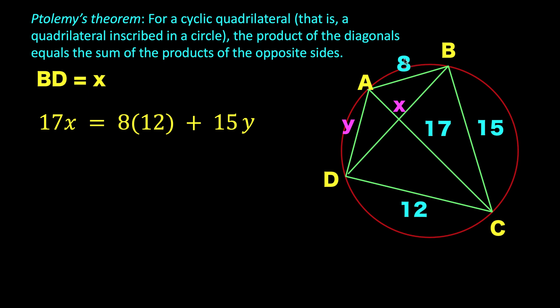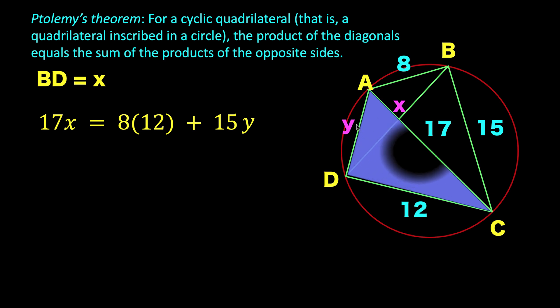So, the opposite sides AB and DC have a product of 8 and 12. The opposite sides AD and BC have a product of their lengths to be 15 and Y. But our problem is we do not know the length of this Y.